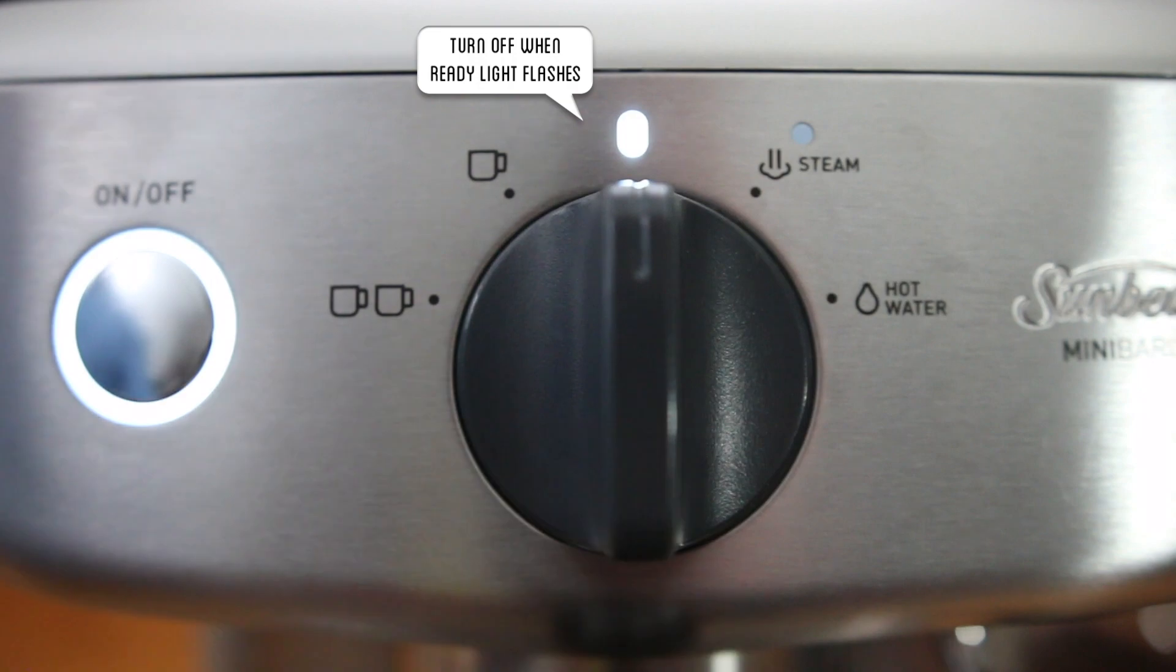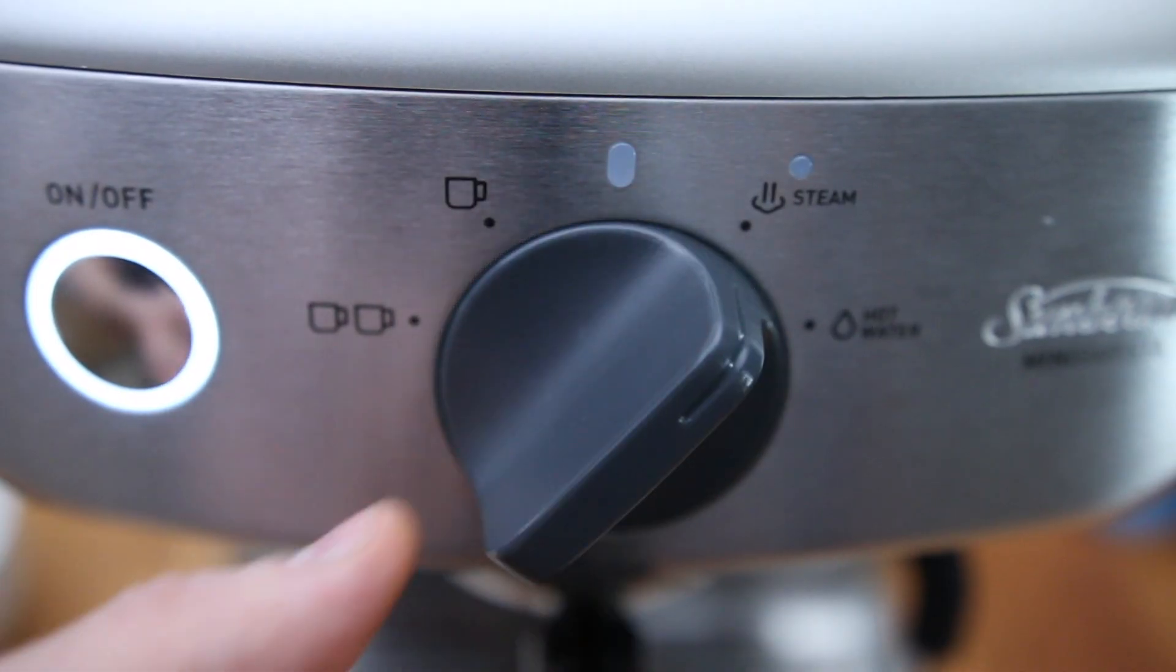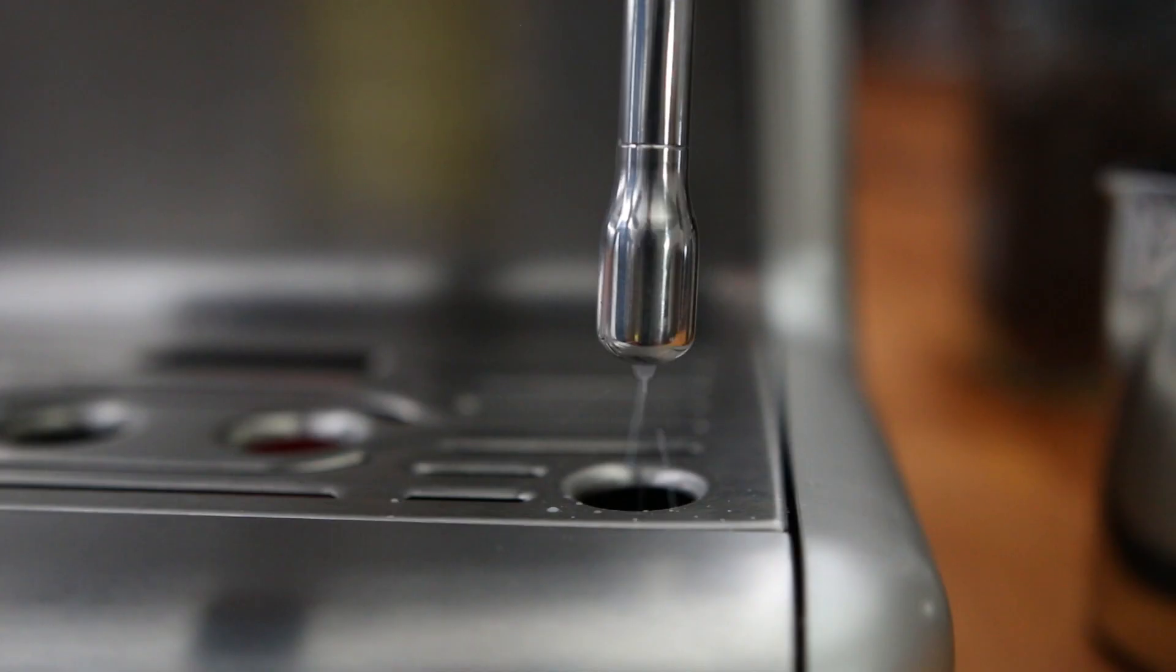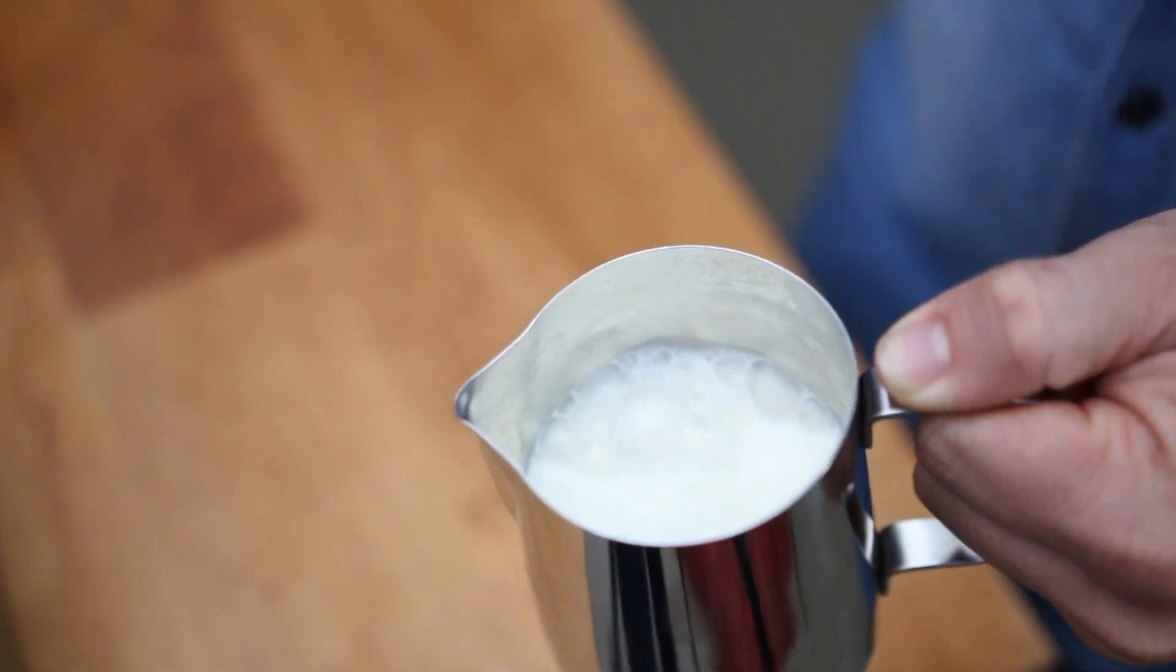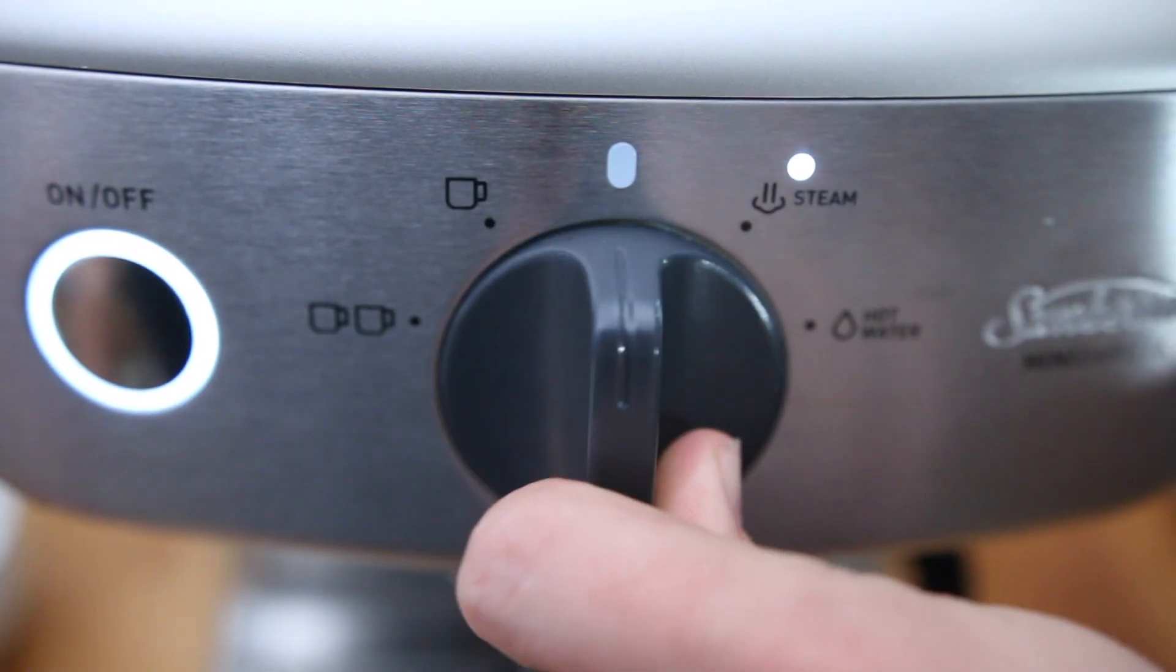If you like milk like I do then turn the dial to steam. Now a little water may come out while it heats up. Fill your jug just below the spout with fresh cold milk. When the machine is ready turn the dial back to vertical.